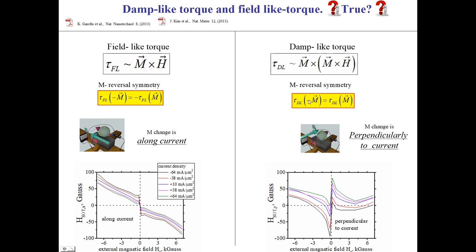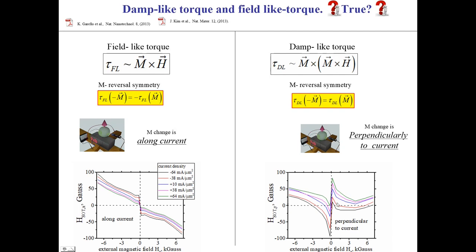The measured second harmonic component perpendicular to the current is symmetrical with respect to magnetization reversal; therefore, it was assigned to the damp-like torque, which is proportional to the square of the magnetization. The high-precision measurement shows a similar tendency: the component of the SOT field along the current is nearly asymmetric with respect to magnetization reversal, while the component perpendicular to the current is very roughly symmetrical. However, a more detailed analysis indicates that it is unlikely there are two independent components of different symmetry. Instead, there is only one SOT magnetic field whose amplitude and direction change under magnetization reversal.